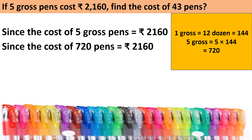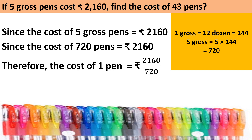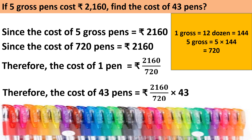According to the unitary method, we will find out the cost of 1 pan. The cost of 1 pan equals 2160 divided by 720. Now, the cost of 43 pans equals 2160 divided by 720, multiplied by 43. Cancelling zeros, then dividing 216 by 72 gives 3, since 72 threes are 216. So, 3 multiplied by 43 gives Rupees 129 — the cost of 43 pans.